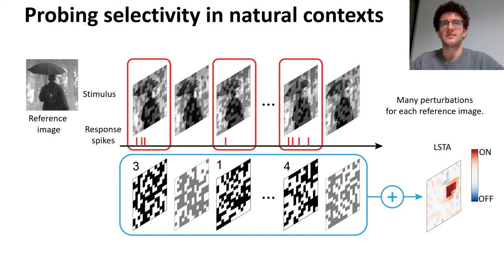The filter resulting from the average is similar to an STA, but the response with which the white perturbations were weighted depended also on the natural image. So we called it local STA, an STA localized around the reference natural image.